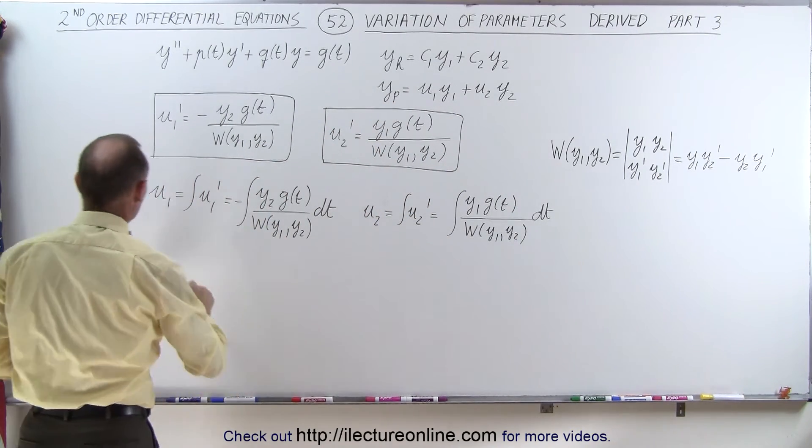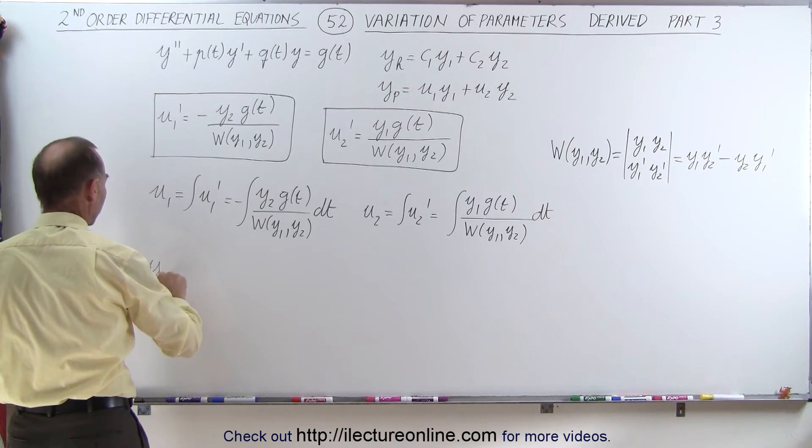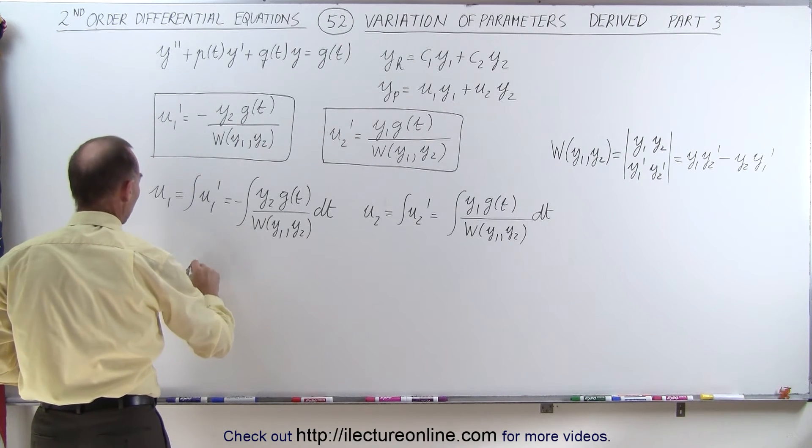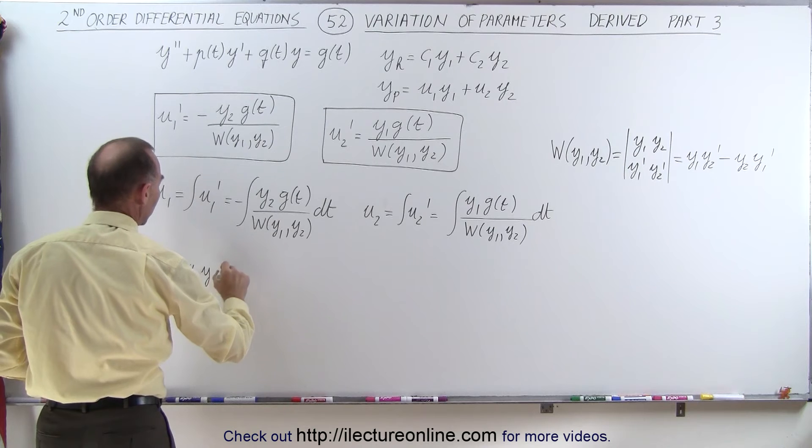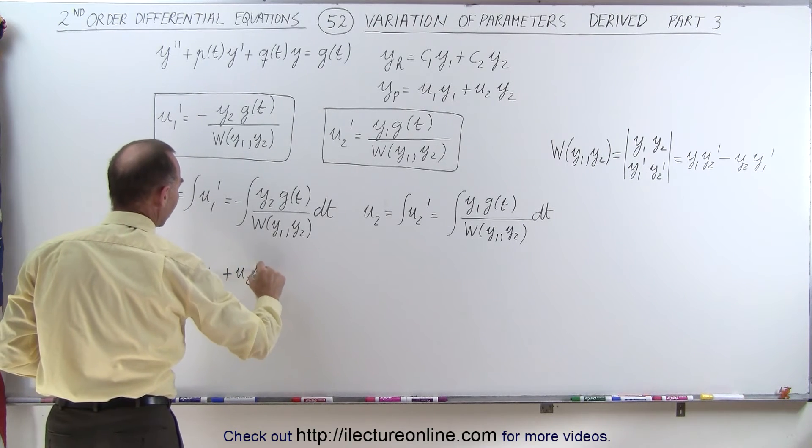Then, finally, our particular solution, y particular, is going to look like u1 times y1 plus u2 times y2.